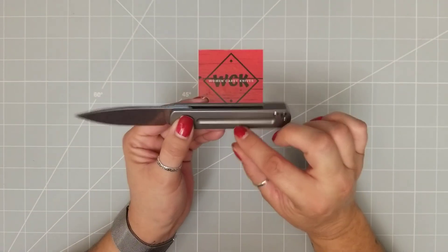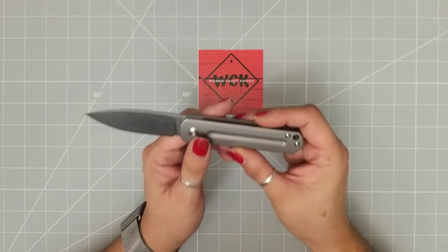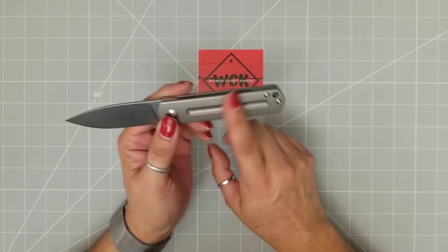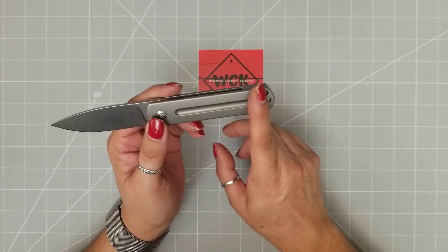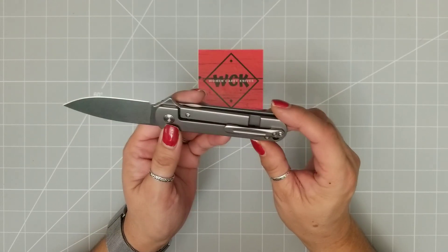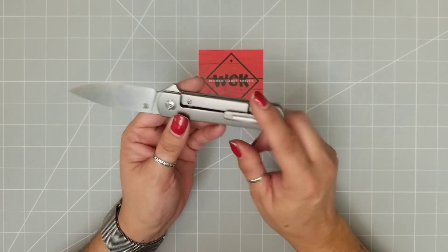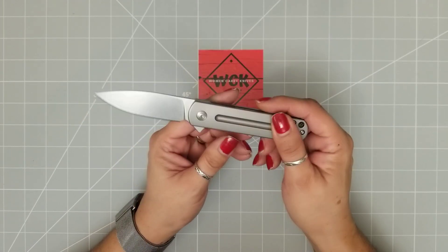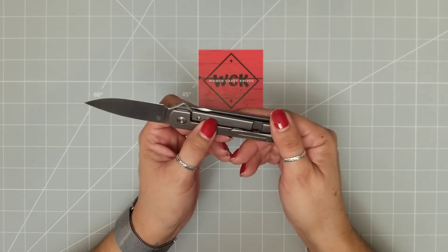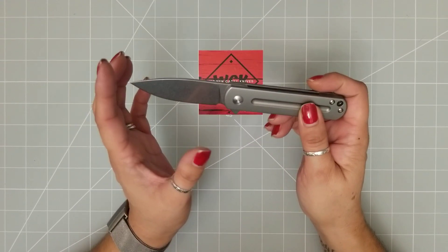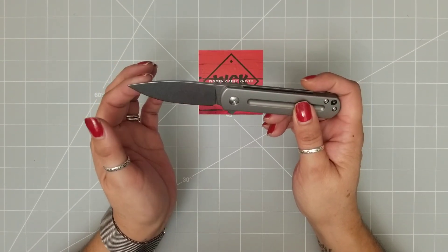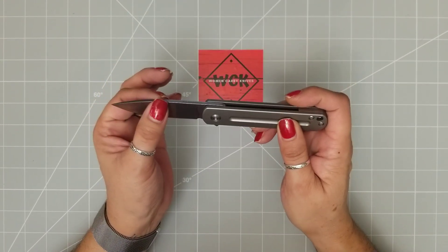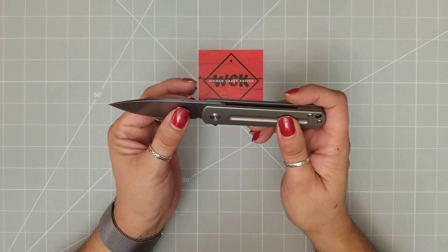Now it is only 2.8 ounces. So this is a light knife. It is all titanium. Your handle material is all titanium. Your clip is titanium. Your back spacer is titanium. It is a frame lock. You have this gorgeous drop point blade with a stonewash finish and it is just gorgeous.